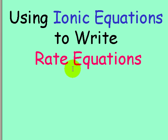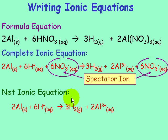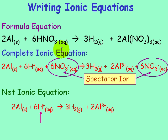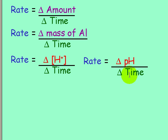We can use ionic equations to write rate equations. Rate is the change in the amount of something over change in time. Going back to our net ionic equation, aluminum solid is on the left, so it is consumed — for solids we can measure the change in mass, so one rate equation is the change in mass of aluminum over change in time. H⁺ is aqueous, so we can measure the change in concentration of H⁺ over change in time. Since H⁺ affects acidity, as H⁺ decreases the substance gets less acidic, which can be expressed by pH — so we could also express the rate as the change in pH over change in time.